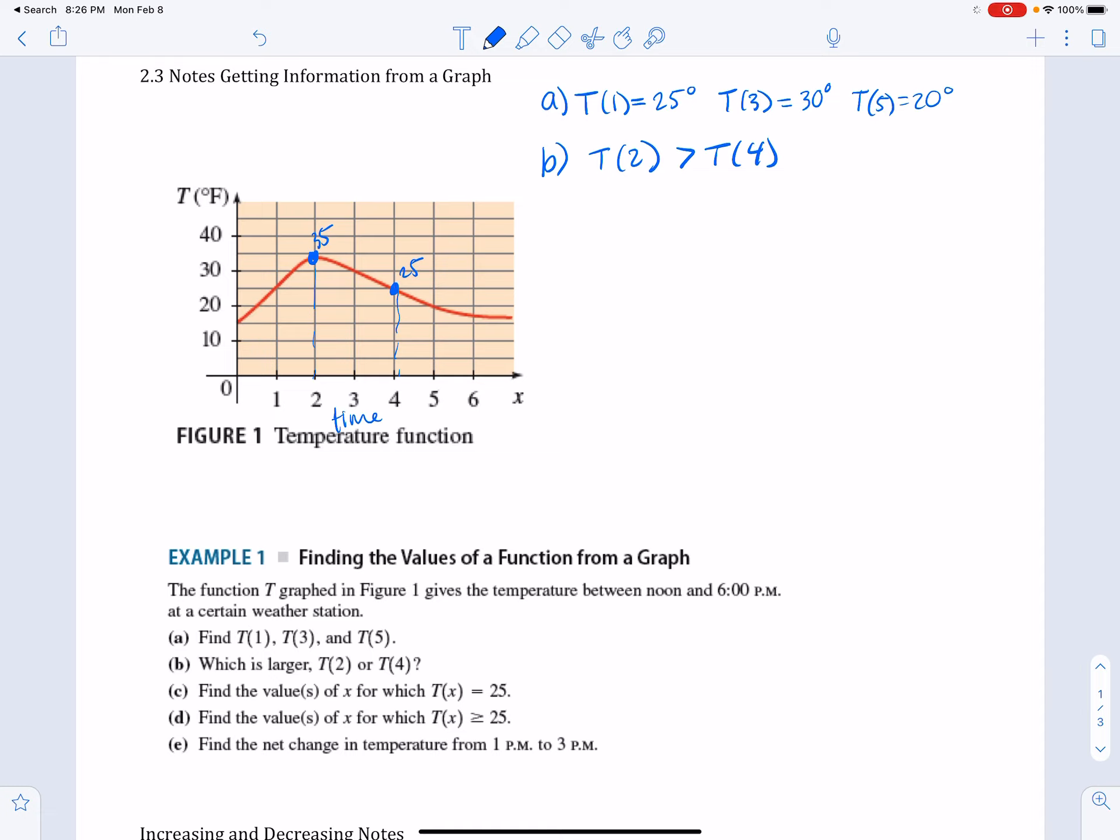Part C: find the values of x for which T(x) is 25. So remember, we're looking for the function temperature needs to be 25, so that's this value right here. And we can see that there's two points - this point and this point over here - when the temperature outside was 25 degrees. We can write it mathematically like this: T(1) equals 25 and T(4) equals 25. But we can also write a sentence, so the sentence is: the temperature was 25 degrees at 1 o'clock p.m. and 4 o'clock.